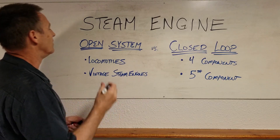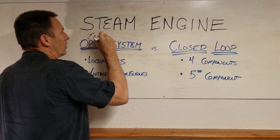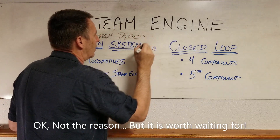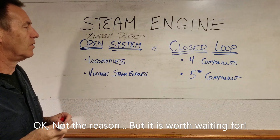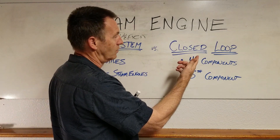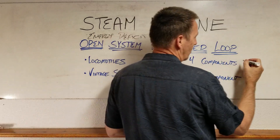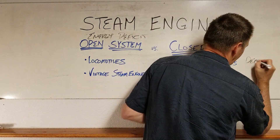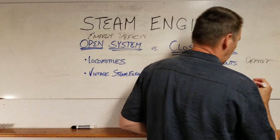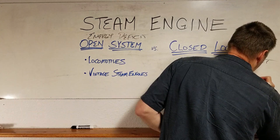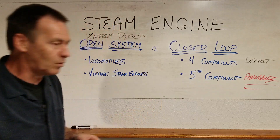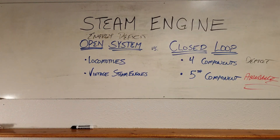There is good reason to revisit steam. Open systems are energy deficit, and so we want to move over to the closed loop side of things. Four components is still deficit — nothing too exciting going on there. But the fifth component brings us into abundance, and that's what we want to talk about.